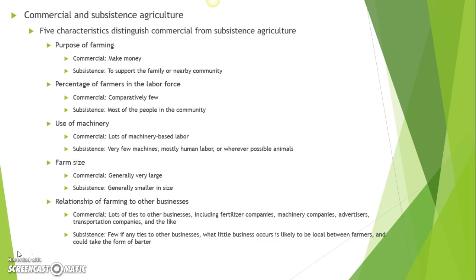On subsistence farms, a lot of the work gets done manually. For instance, on a subsistence wheat farm, you would see the farmer out with a scythe — those long-handled tools with the curved blade, familiar perhaps from images of the grim reaper — used to cut through grass easily, along with a machete or similar knife. To separate the wheat from the chaff, you literally have to pound it, and in subsistence farming that gets done by hand. On commercial farms, machines do that for the farmers.